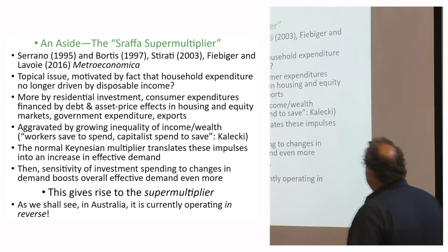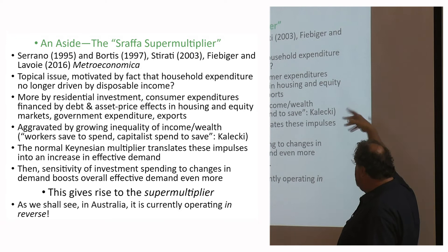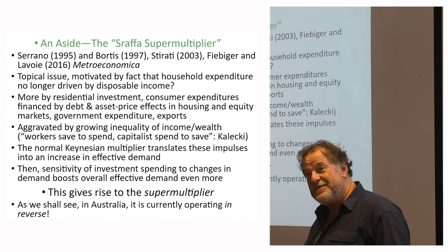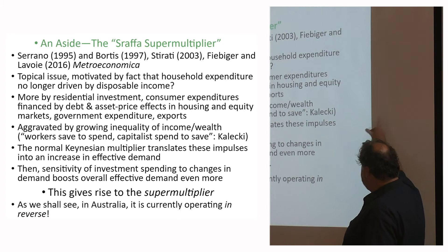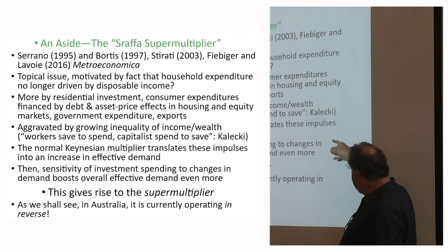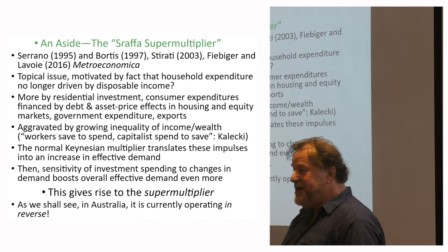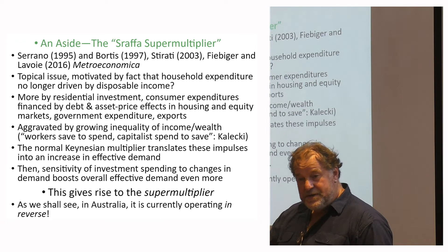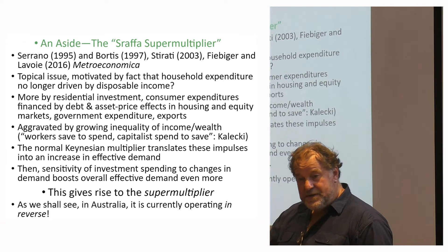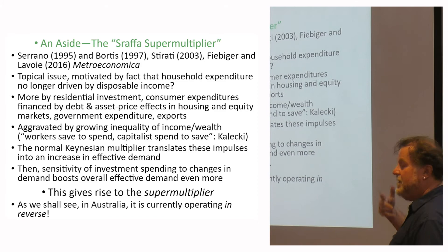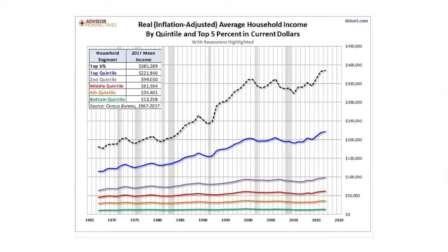Kalecki's simple maxim is that workers save to spend, but capitalists spend to save. The normal Keynesian multiplier translates impulses into increases in effective demand, but the sensitivity of investment to changes in demand boosts overall effective demand even more — that's the supermultiplier. In Australia at the moment, we're just coming out of a housing downturn, and the supermultiplier has been working in reverse: depressed house prices lead to reduced spending induced by wealth rather than disposable income.